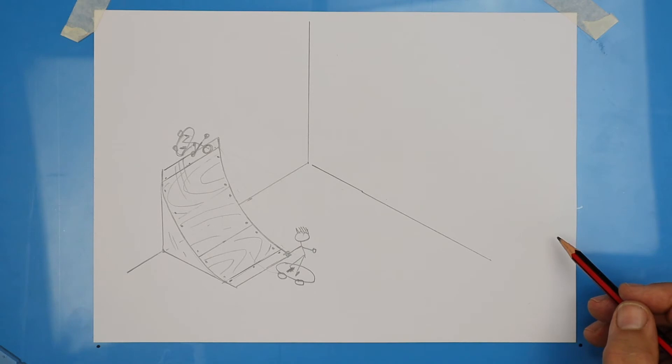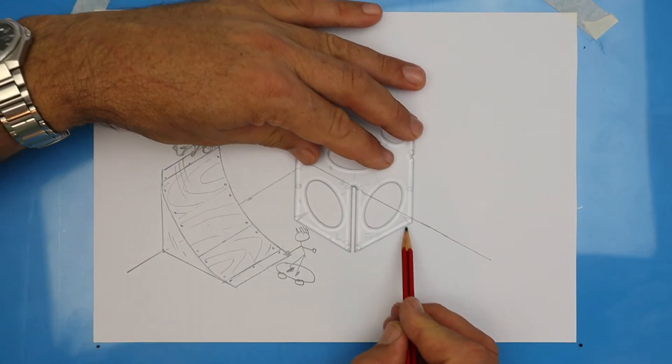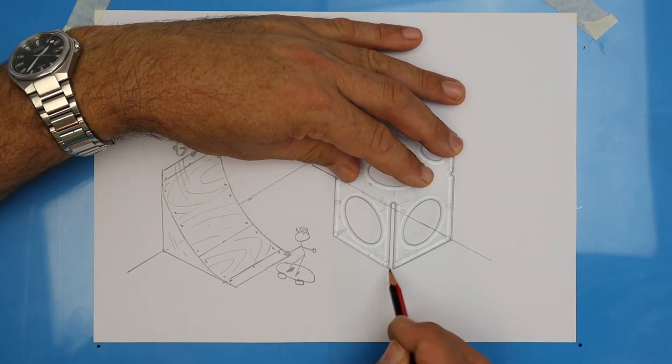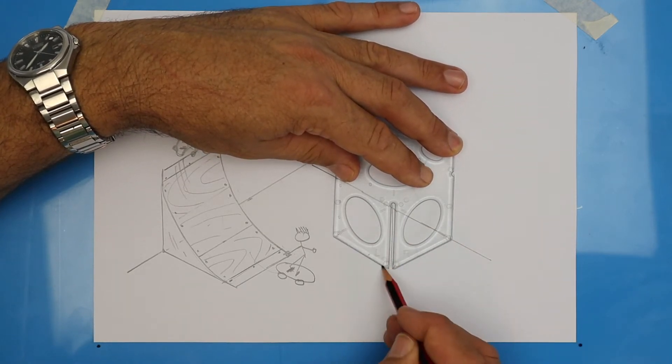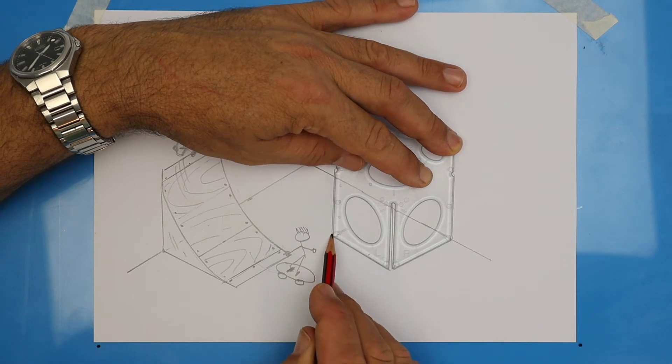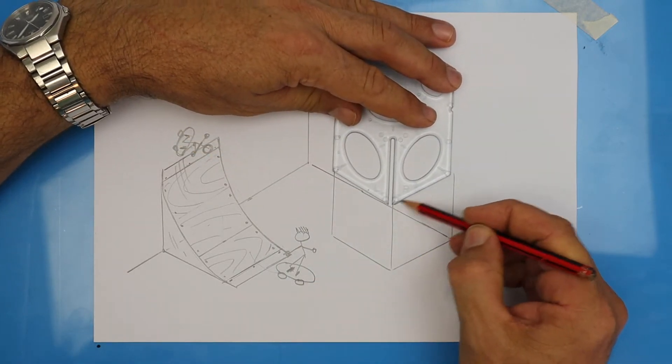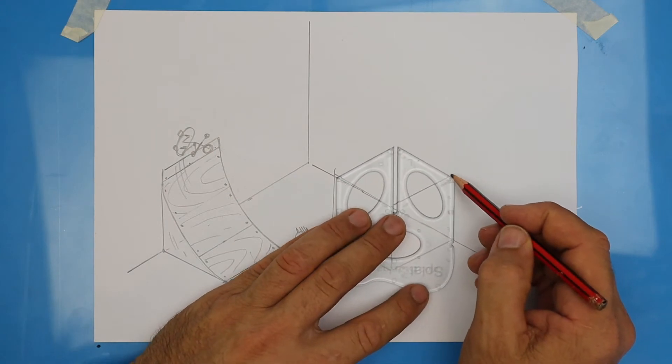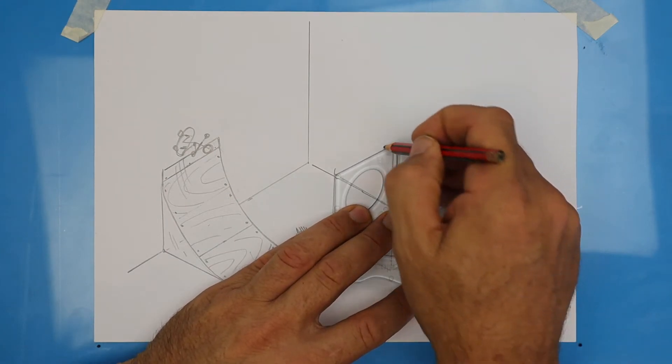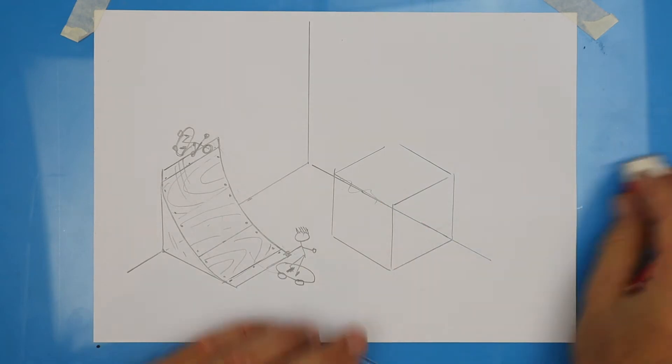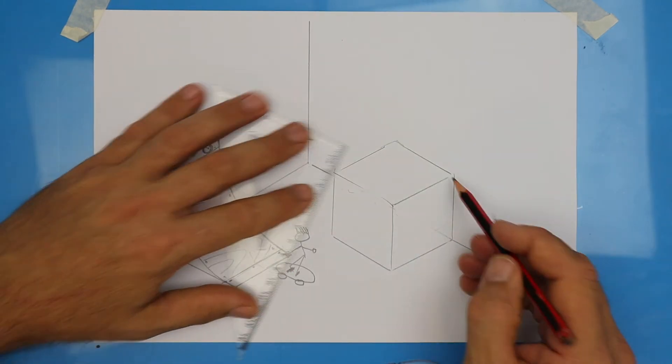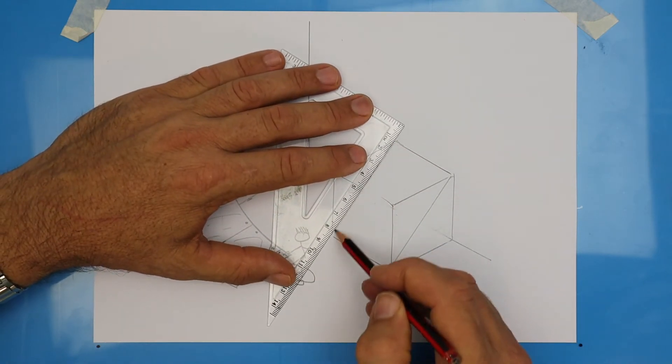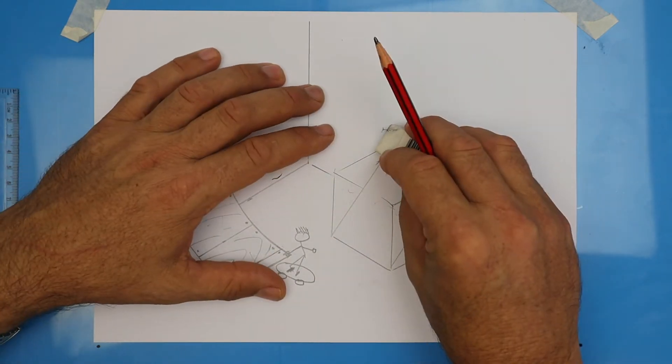I'm going to try and draw another ramp. As long as I have that corner on the line, I could start anywhere on the line. Let's begin by drawing a cube again. Erase those unwanted lines, and then go ahead and join the diagonals. Can you see how this ramp is facing the other way?